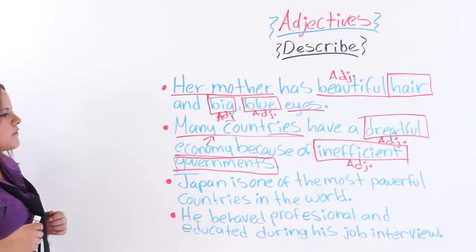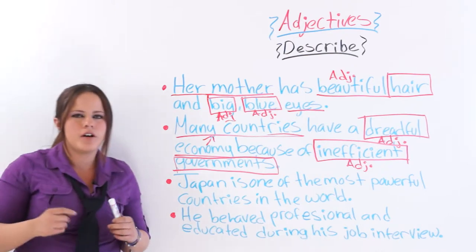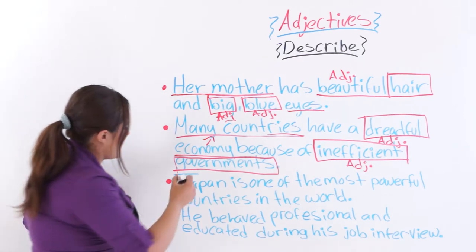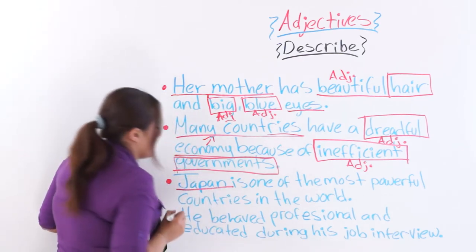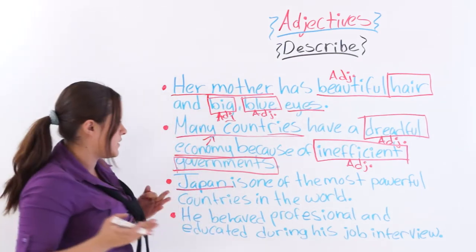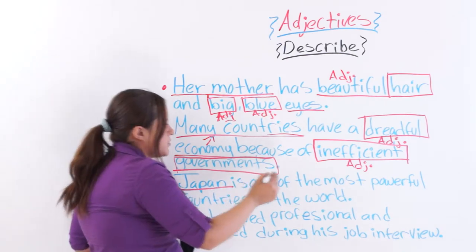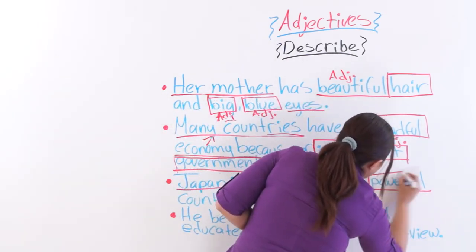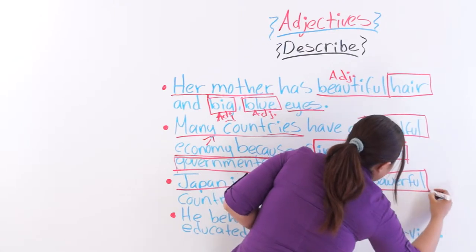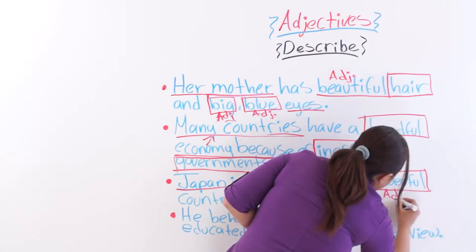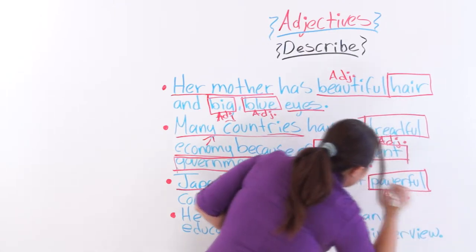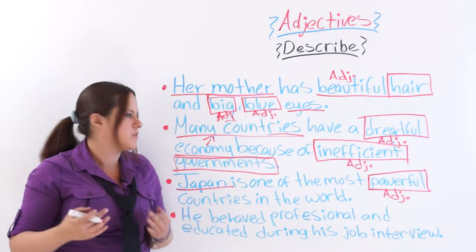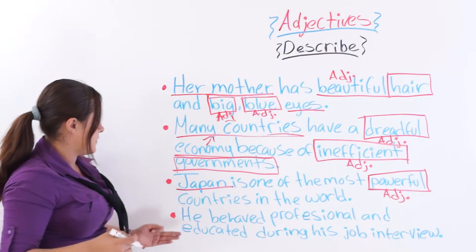Next: Japan is one of the most powerful countries in the world. We are describing Japan, which is a noun — a place. 'Powerful' is the adjective describing the noun 'countries.'